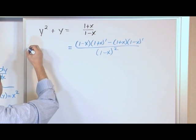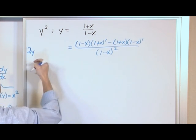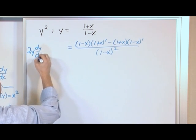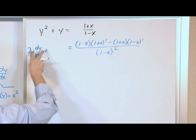The derivative of this first term is 2y, just like if it were x, but you have to multiply by dy dx because you don't know how y varies with respect to x. That takes care of this term.